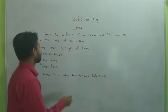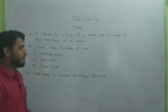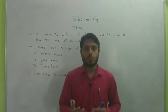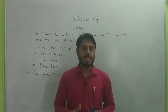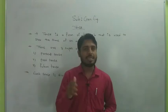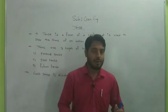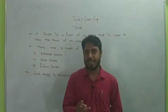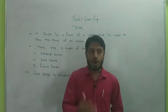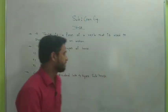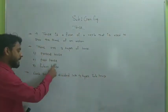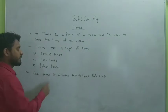There are three types of tenses used in English grammar: present simple tense, past simple tense, and future tense.